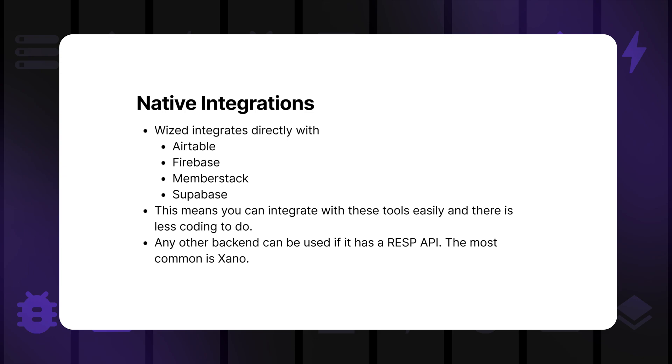We can break these back-ends into two types: those that have native WISD integrations and those that do not. WISD can directly integrate with Airtable, Firebase, MemberStack, and Supabase, meaning you can integrate with these tools a bit more easily with less coding to do. But you can use any other back-end if it has what's called a REST API. Any back-end as a service out there is more than likely going to allow you to set up REST APIs. Xano is a very common example, and just because it doesn't have a native integration does not mean it's difficult to implement. Xano is actually the most common back-end we see used with WISD.